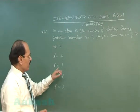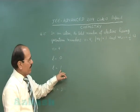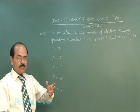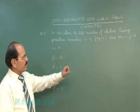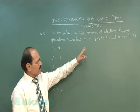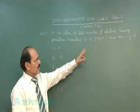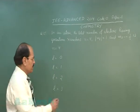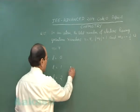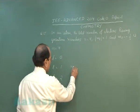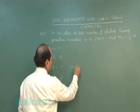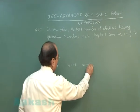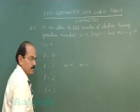For l equal to 1, the magnetic quantum number can have 3 values, but we have been given the condition that mod ml is 1. This means the magnetic quantum number can have value plus 1 or minus 1.